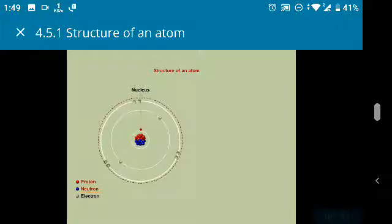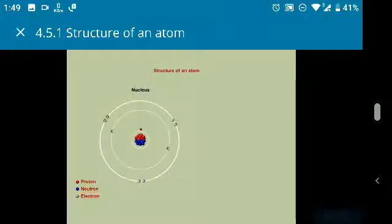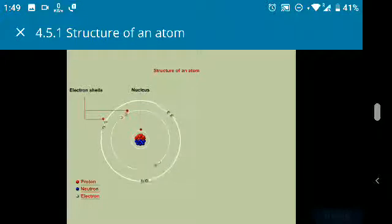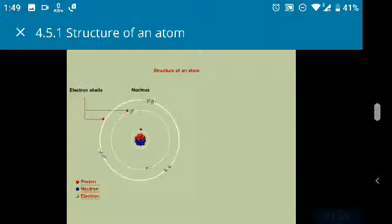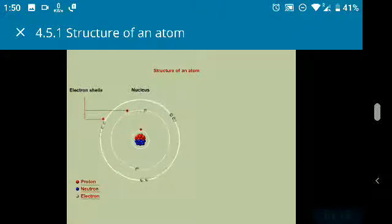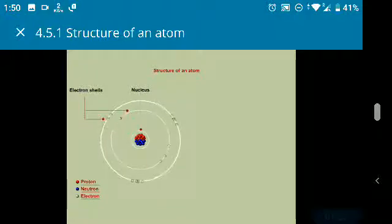The electrons revolve around the nucleus in fixed orbits. These are the electron shells. The space around the nucleus in which the electrons revolve determines the size of the atom. Thus, an atom consists of three elementary particles, namely proton, neutron, and electron. Atoms of different elements are built up from different numbers of these fundamental particles.